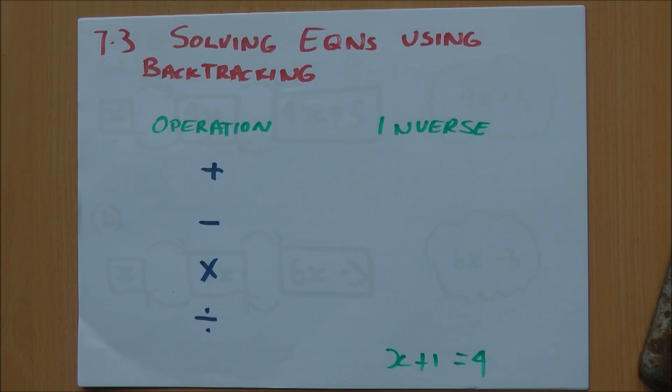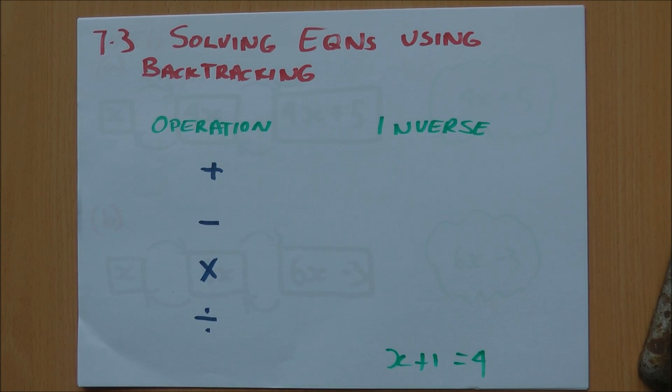But we use other methods such as backtracking to solve equations that are a little bit harder to understand, where the answer is not so obvious to start with.